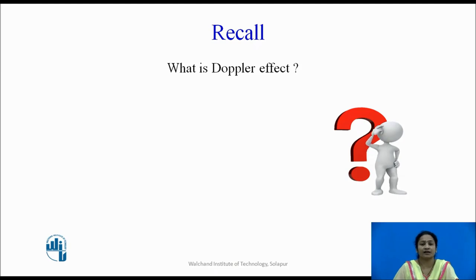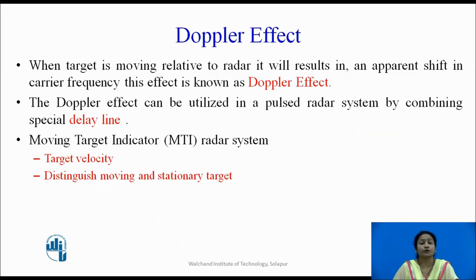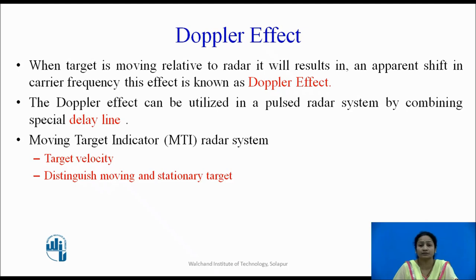Before starting with the explanation of the MTI Radar System, let us recall what is the Doppler Effect, which we discussed in the previous lectures. When a target is moving relative to the radar, it results in an apparent shift in the carrier frequency — this is known as the Doppler Effect. The carrier frequency is the transmitting frequency sent from the radar towards the target. By utilizing this Doppler Effect in a Pulse Radar System with a special delay line, an improved radar system known as the MTI Radar System was developed.